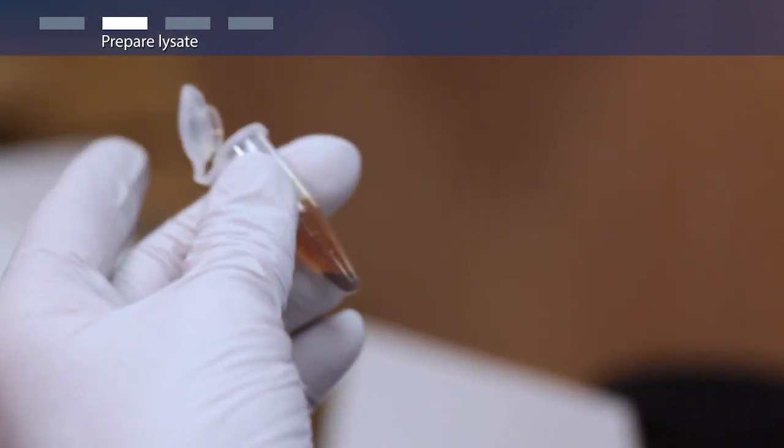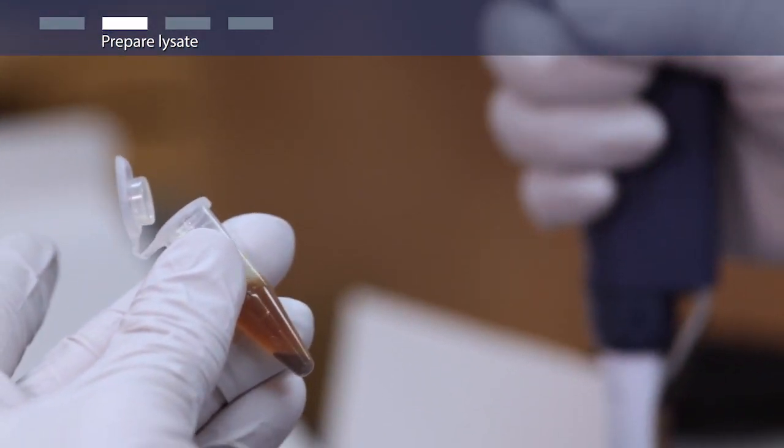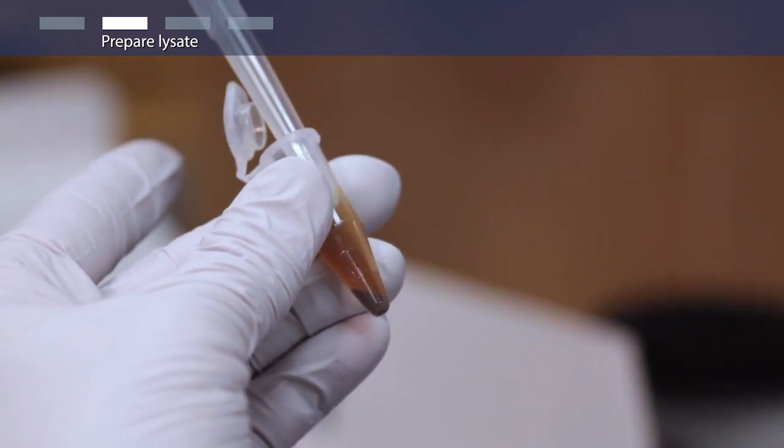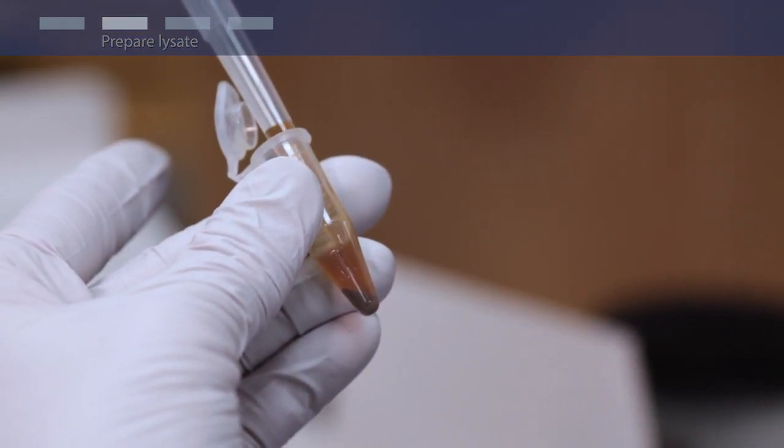Following a 2-minute centrifugation at 14,000 G, transfer up to 500 microliters of the supernatant to a clean microcentrifuge tube, avoiding the pellet and any debris.